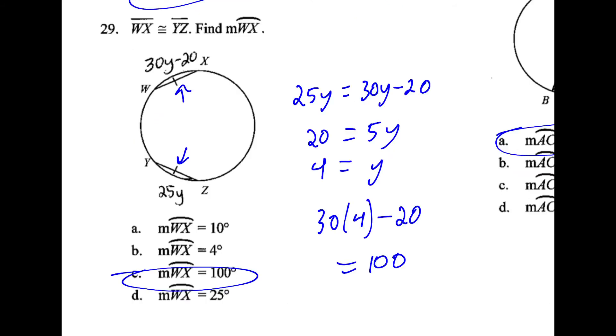We see these little marks here to show the equivalencies. So we can see that the 25y is equal to 30y minus 20. Solve for y. Plug it in. 100.